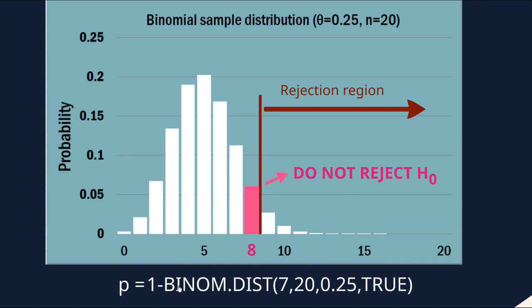It's just going to be 1 minus this function here, which is the binomial distribution, which gives us the cumulative distribution at a particular point that we select. So if we've selected 7, where 20 is the value of n and 0.25 is the value of theta, this little part of the formula will give us the region from 7 and below. So if we go 1 minus that, we'll get the region from 8 and above.